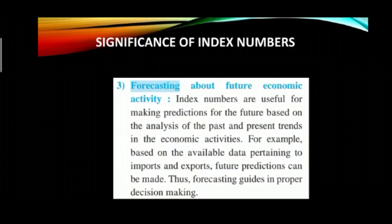Third: forecasting about future economic activity. To make forecasts about the future, you obviously look at your past performance — what your past trend was and where you currently stand — and based on both you estimate where you will reach in the future. Index numbers are useful for making predictions for the future based on the analysis of past and present trends in economic activities. For forecasting, you need both past data and present data, and then with the help of index numbers you predict about the future. For example, based on available data pertaining to imports and exports, future predictions can be made; thus forecasting guides proper decision making.